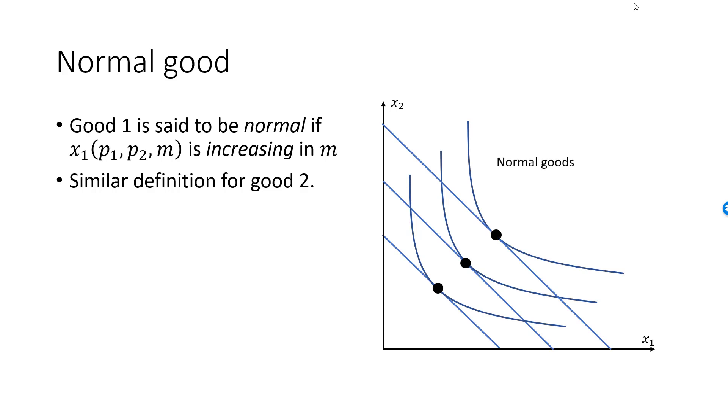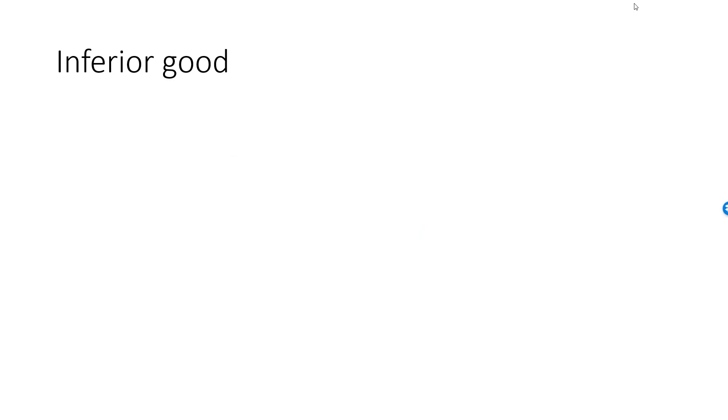Both goods are normal goods. If the demand function for good 1 is strictly decreasing in m, then we say that good 1 is inferior. Don't confuse an inferior good with a bad or a neutral good. The term inferior good is typically used only for goods that are desired, but which has the property that we tend to consume less of it when income increases.